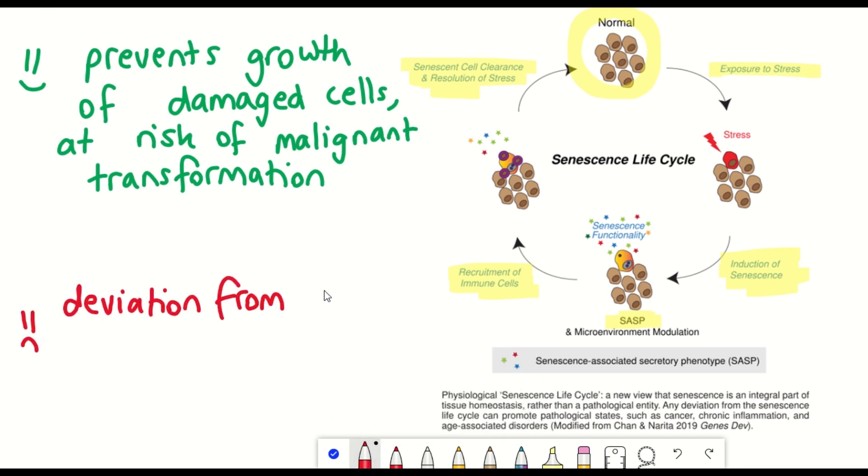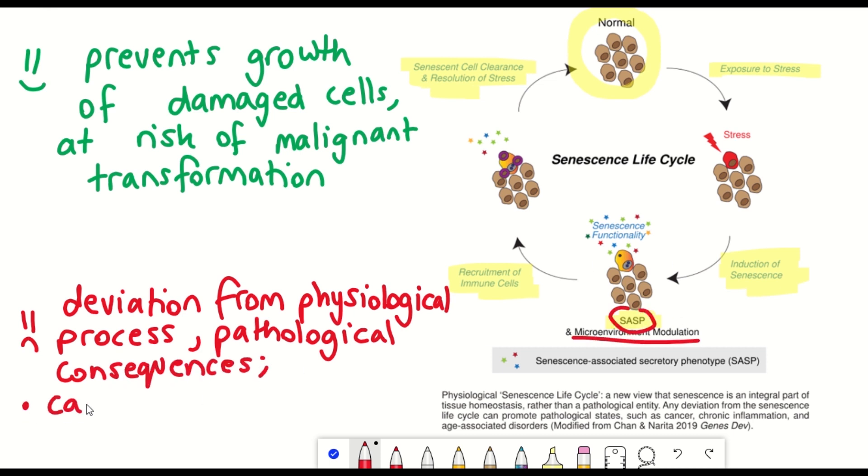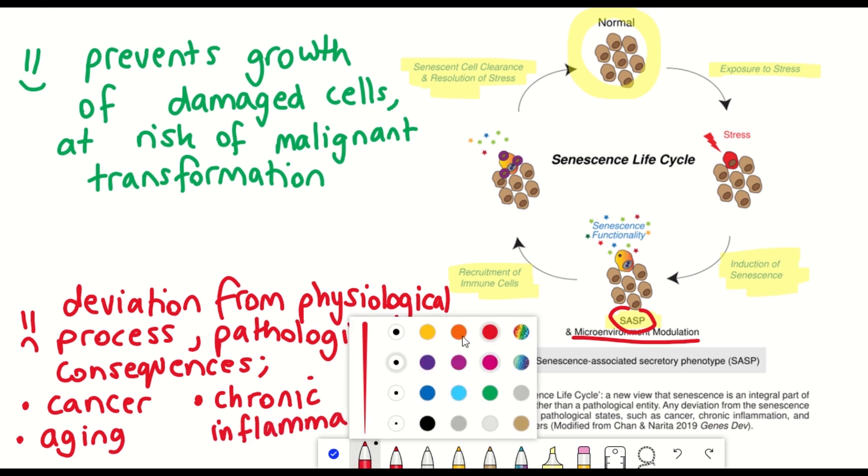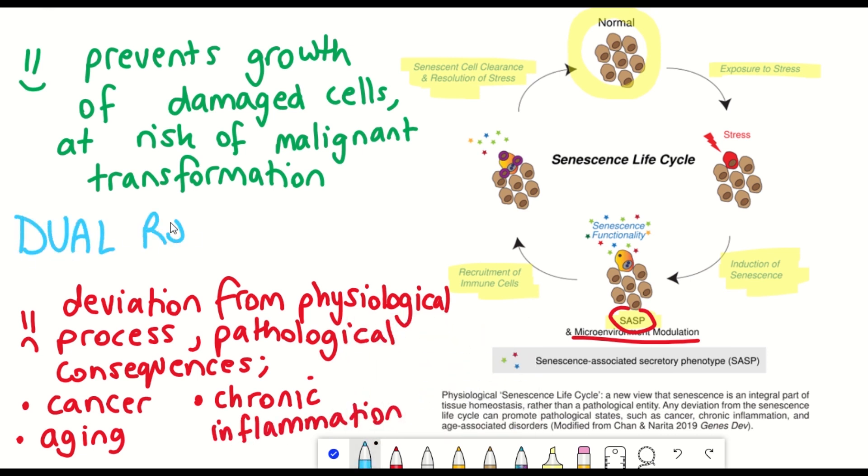However, we also think that senescence has a dual role in cancer and also has negative consequences that can come from, in particular, the secretory phenotype that have pathological consequences, including cancer formation, chronic inflammation, and age-associated disorders.